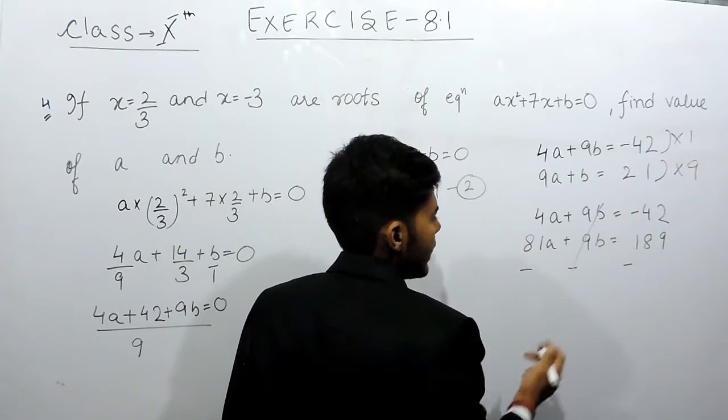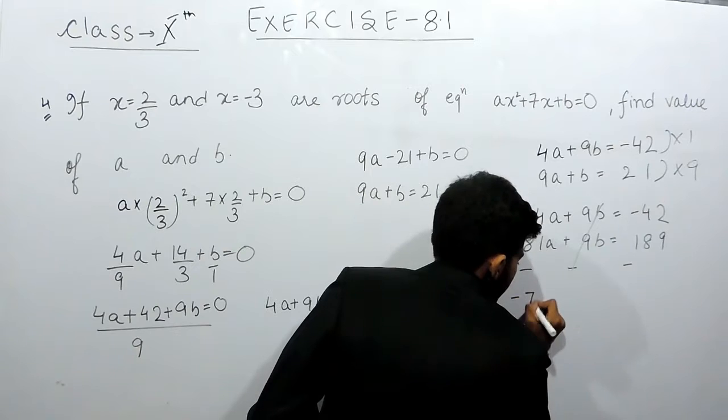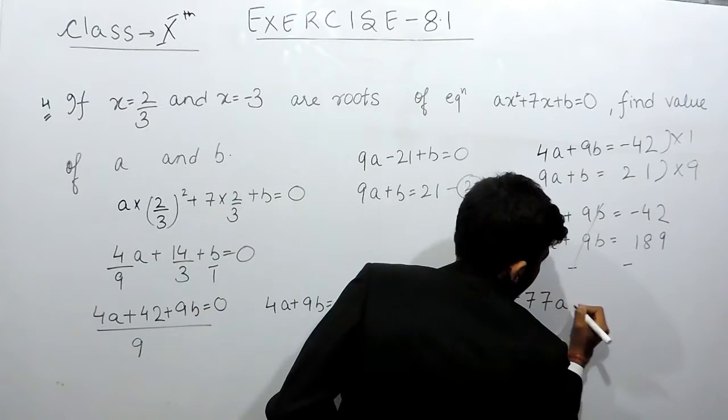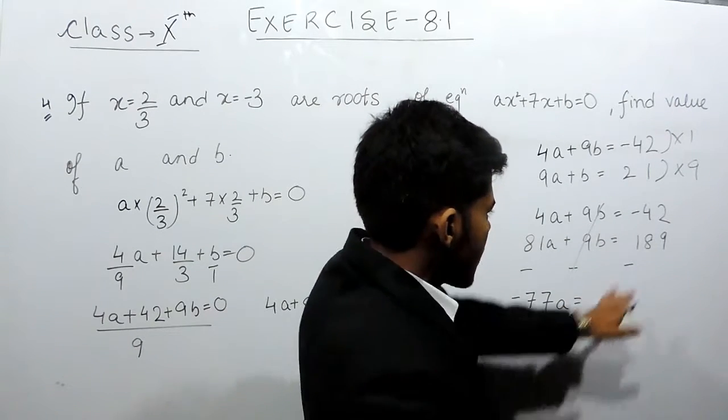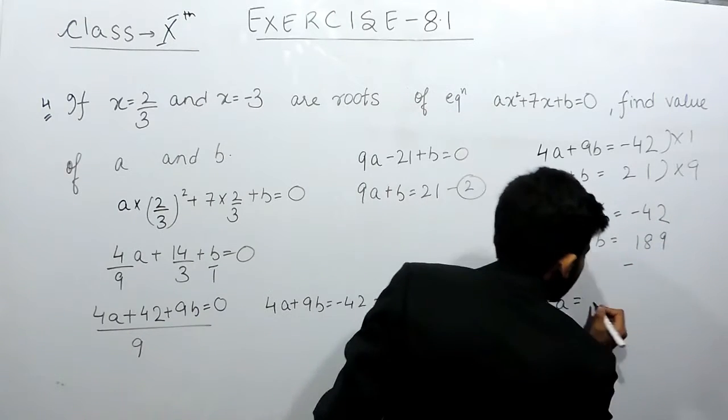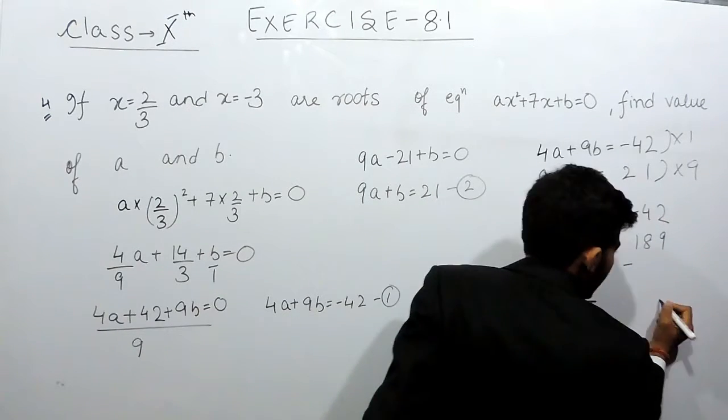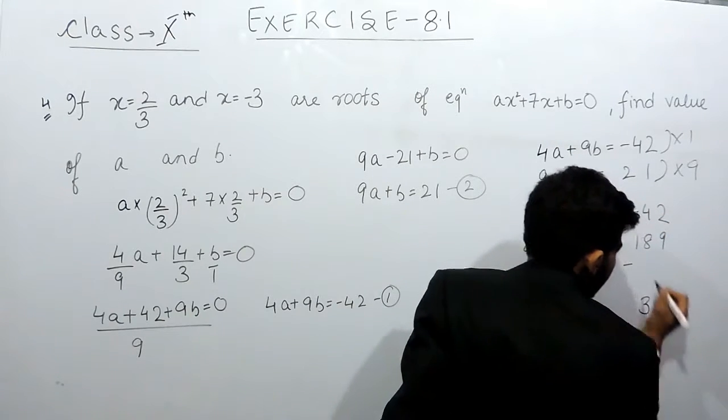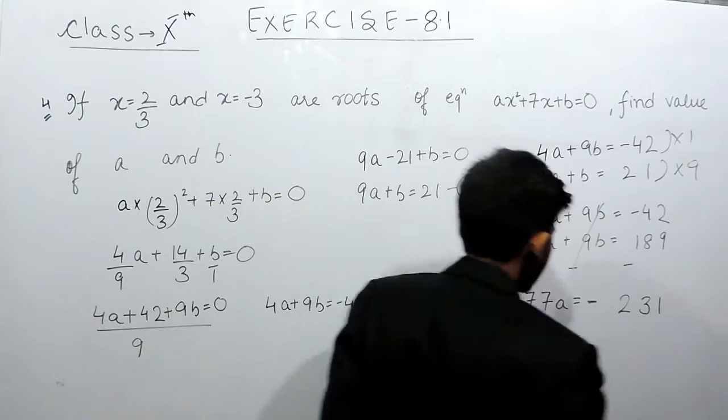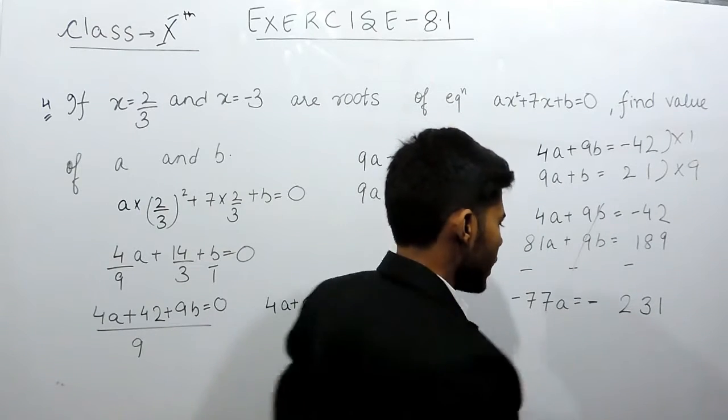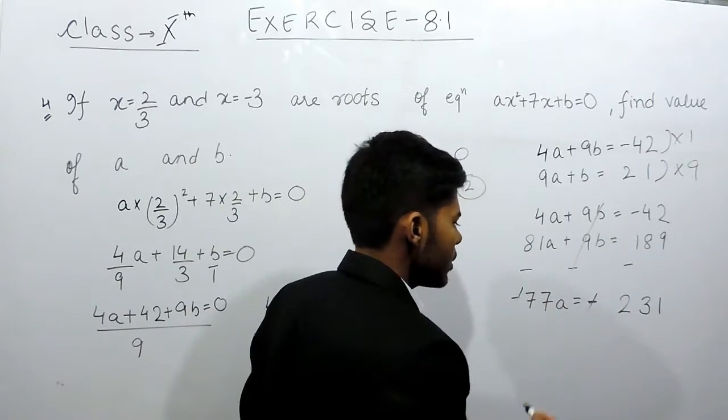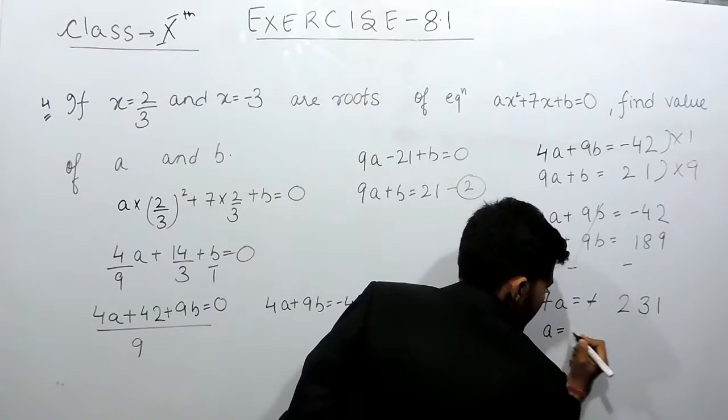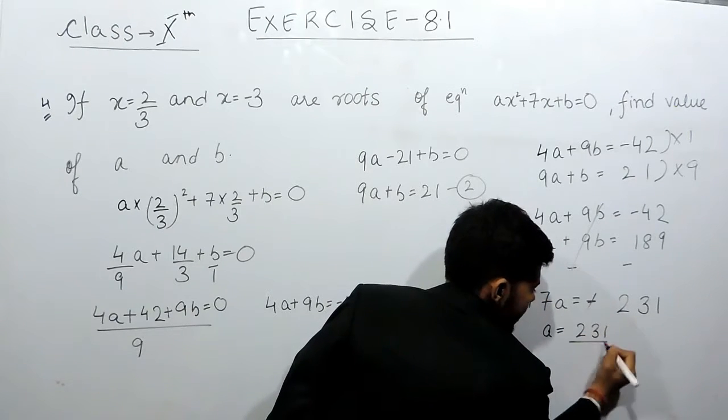So, 4 minus 81, that will be equals to minus 77a equals to minus and minus gives us plus but the sign remains minus 9 and 2, 11 carry 1, 8 and 5, 13 carry 1 and that will be equals to 231. Now these minus will cancel out, a will be equal to 231 by 77.